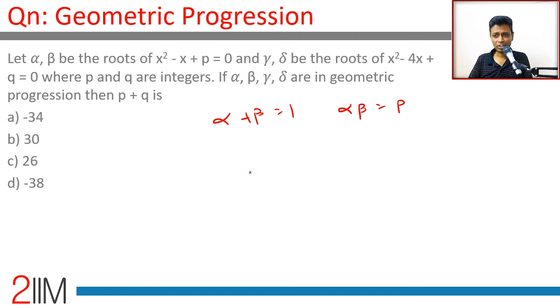Gamma and delta be the roots of x squared minus 4x plus q equals 0. Gamma plus delta is equal to 4, gamma delta is equal to q.